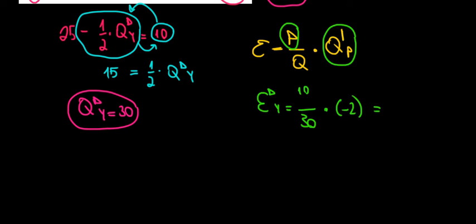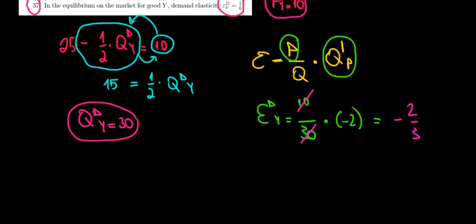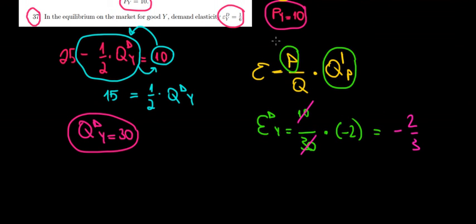Now, what's that going to be? Well, we have over here 10 divided by 30, that's 1 over 3 multiplied with minus 2 becomes minus 2 over 3. So it's minus 2 over 3. And the answer over here, what do we have? It's 1 over 6. So the answer is false. And we are done.